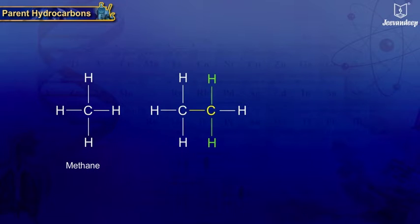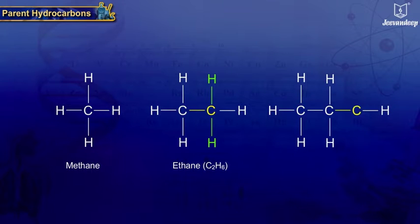C2H6. This is ethane, the next member in the alkane family. If we add one more carbon atom and two more hydrogen atoms to ethane, we get propane (C3H8).